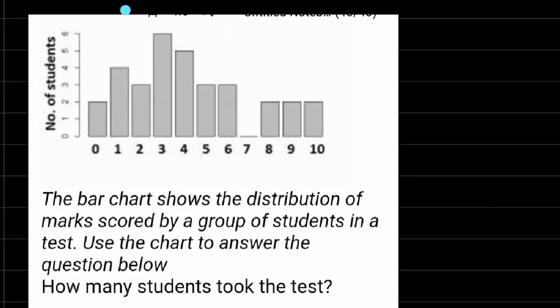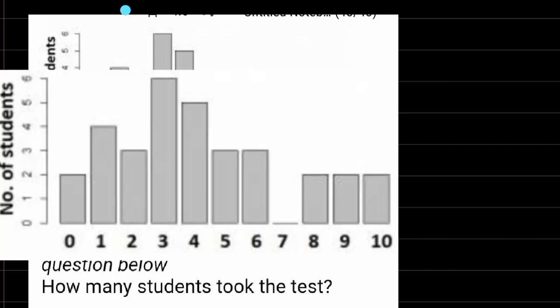The bar chart shows their marks along with the number of students that scored those marks. For 0, I have 2 students. 2 plus. For 1, I have 4 students. Plus 4.